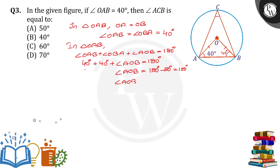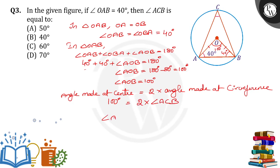So angle AOB is equal to 100 degrees. Now angle made at center is equal to 2 times of angle made at circumference. Now the angle made at the center is given. So 2 into angle made at the circumference is angle ACB. So angle ACB is equal to 100 degrees divided by 2 that is equal to 50 degrees.